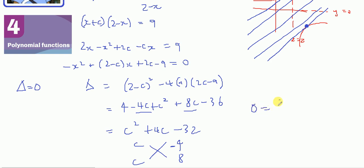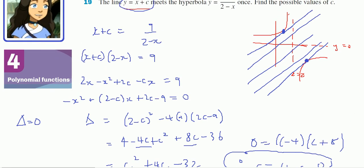Therefore 0 equals c minus 4 times c plus 8. So when c equals 4 or negative 8, those are the two times that the straight line and the hyperbola will touch once.